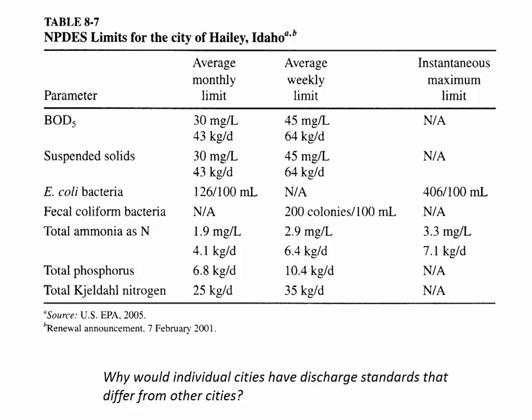Every city has to have a permit to discharge wastewater. Here is a permit for the city of Haley, Idaho, showing the standards they're expected to meet: BOD no more than 30 mg/L monthly and 45 mg/L weekly, also expressed in kilograms per day. There are also limits on suspended solids, E. coli, coliform, ammonia — which is a problem for fish — and nutrients: phosphorus and nitrogen. The Kjeldahl method is a way of measuring nitrogen.